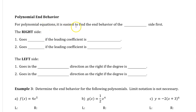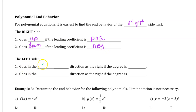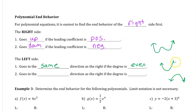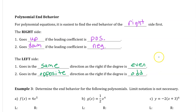For polynomial equations, it's easiest to find the end behavior of the right side first. The right side goes up if the leading coefficient is positive, and down if the leading coefficient is negative. The left side goes in the same direction as the right side when the degree is even — so an even degree polynomial has the same end behavior on both sides. The left side goes in the opposite direction if the degree is odd, so an odd degree polynomial has one side down and one side up.